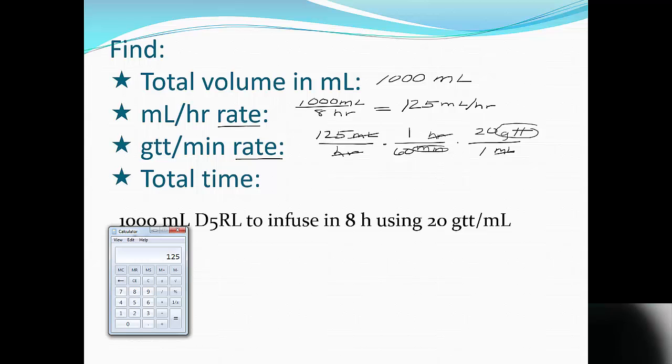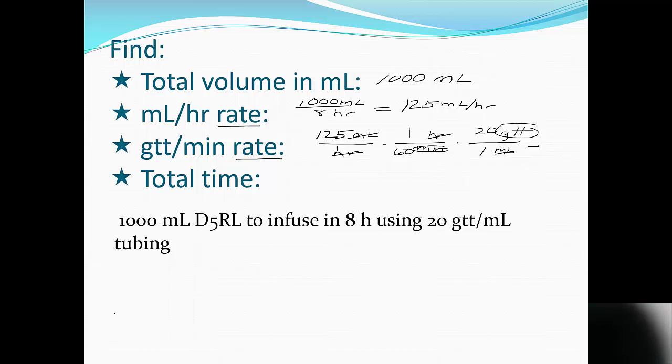So I'm gonna go back to my calculator, and have that 125 typed in before, so times 20 divided by 60. And I need to round to a whole number, so I can count it, and so this is gonna be 42 drops per minute.